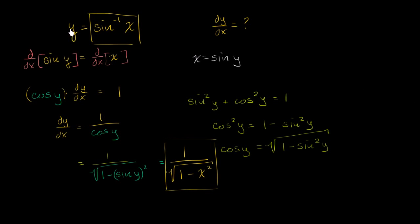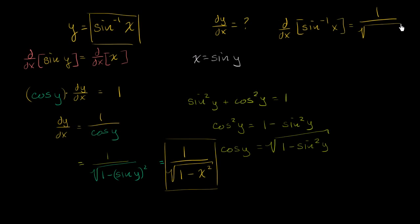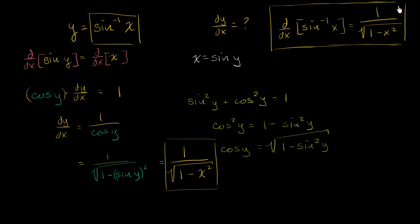To make that very clear: if you take the derivative with respect to x of both sides, dy/dx equals one over the square root of one minus x squared. Or equivalently, the derivative with respect to x of inverse sine of x equals one over the square root of one minus x squared. You could always reprove this if your memory fails — in fact, that's the best way to really internalize it. But this is also just a good result to know, especially as you go further into calculus.